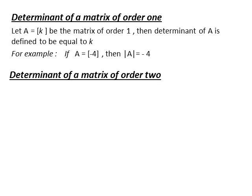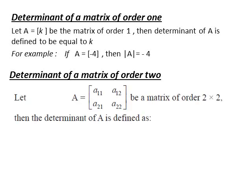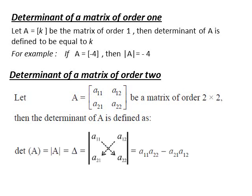Let us discuss the determinant of a matrix of order 2. Let A be a matrix of order 2×2 with elements A11, A12, A21, A22. Then the determinant of matrix A of order 2 is equal to the product of diagonal elements minus the product of non-diagonal elements. So, determinant of A equals A11·A22 minus A21·A12.